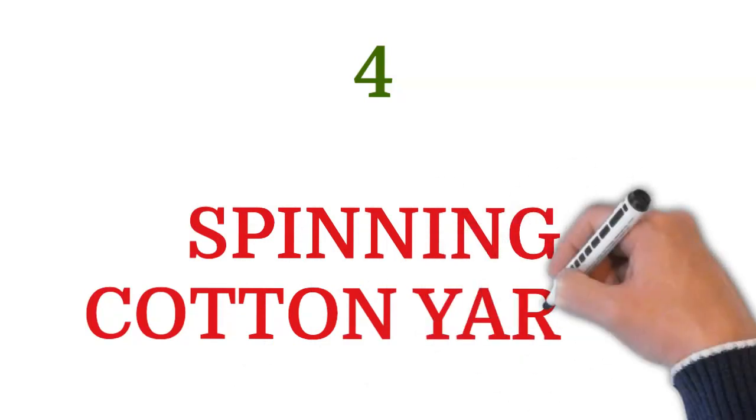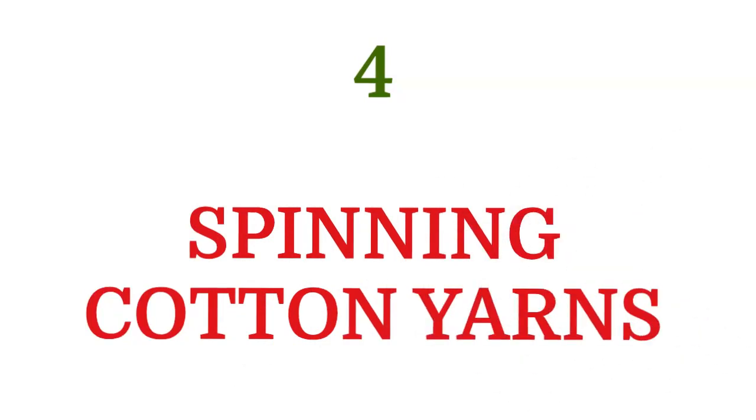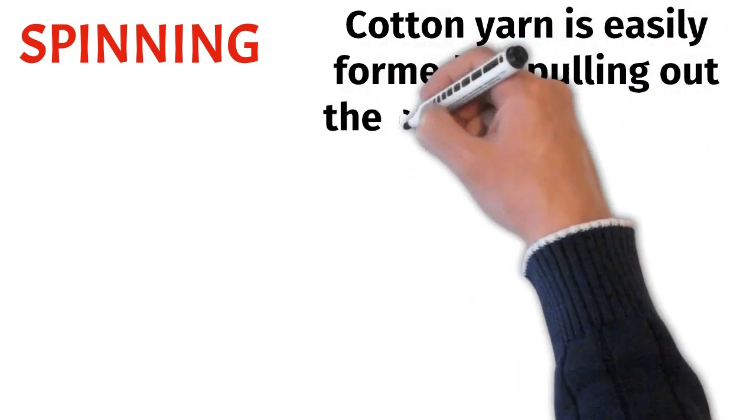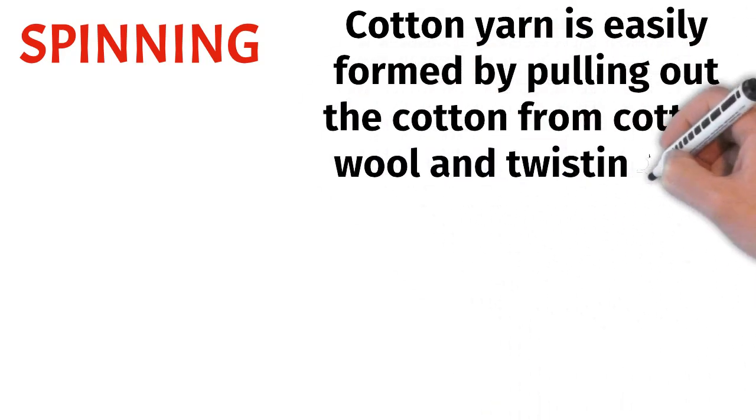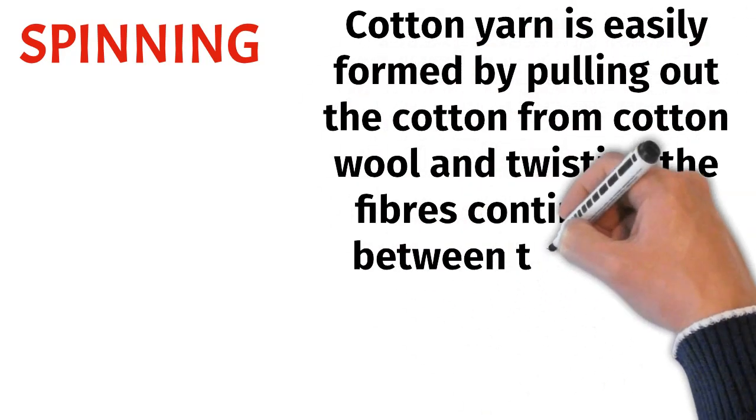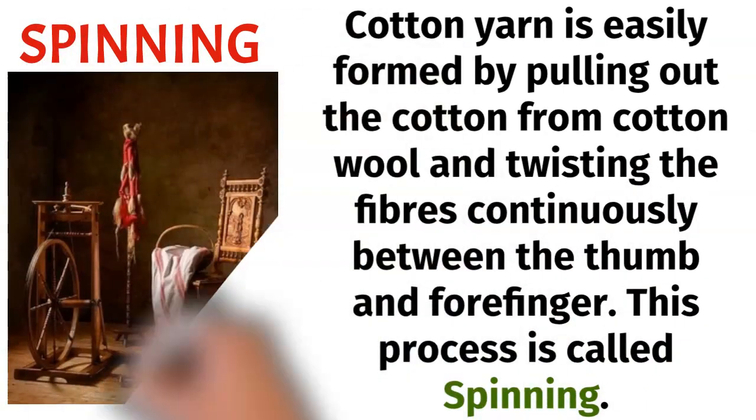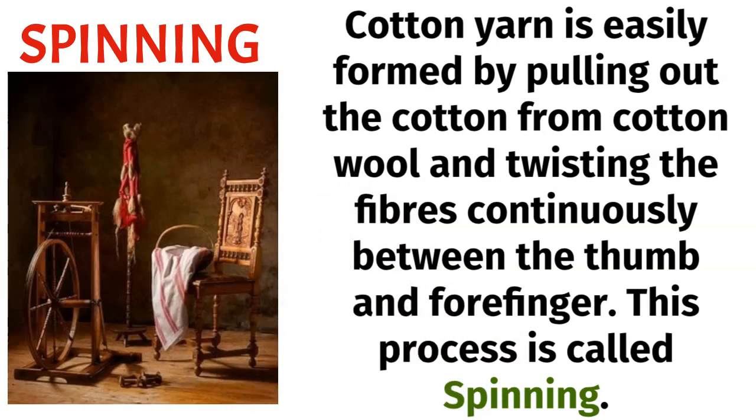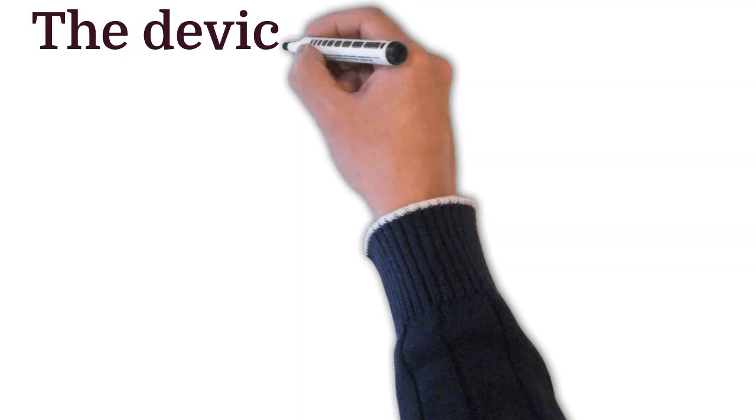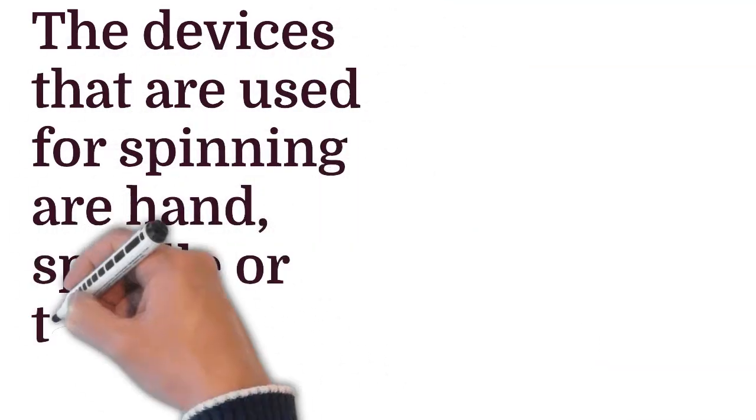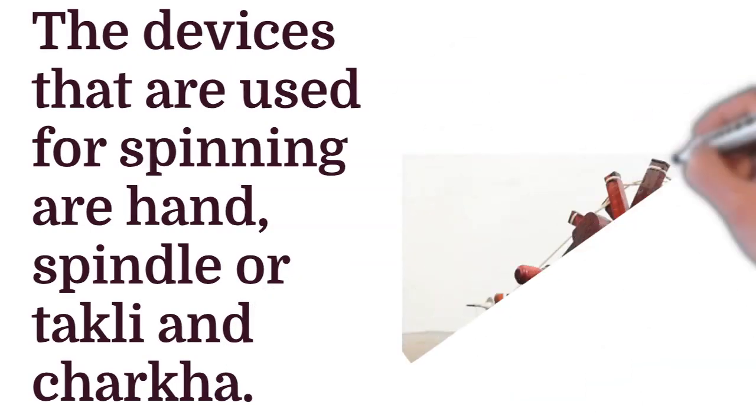Next is spinning cotton yarns. Cotton yarn is easily formed by pulling out the cotton from cotton wool and twisting the fibers continuously between the thumb and the forefinger. This process is called spinning. The devices that are used for spinning are hand, spindle or takli and charkha.